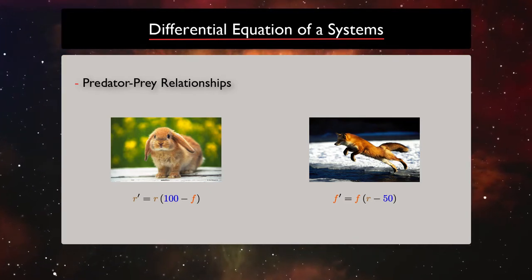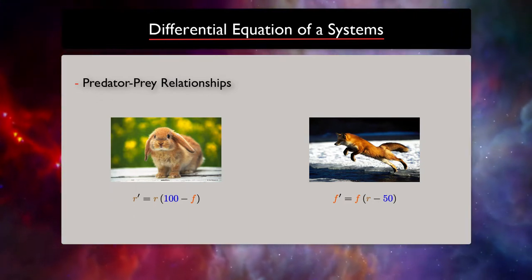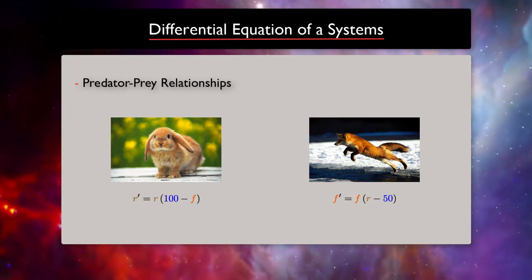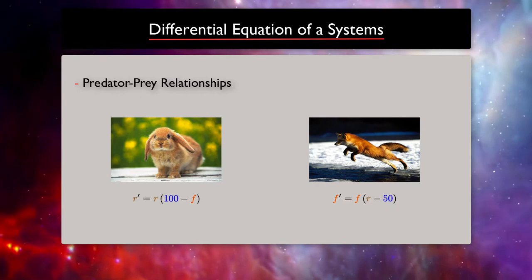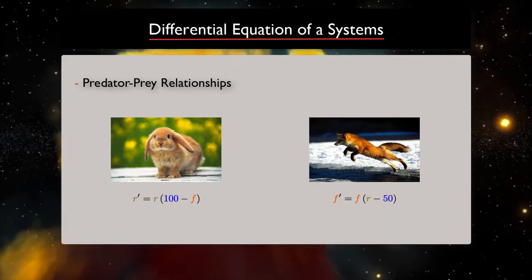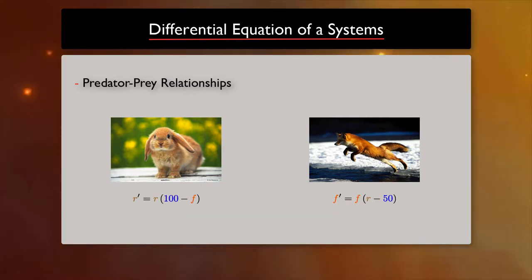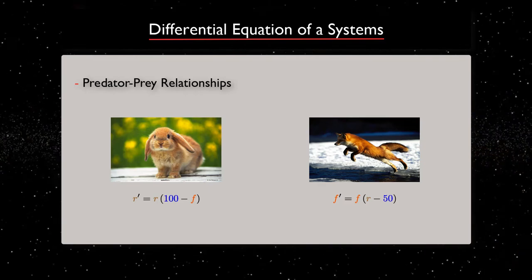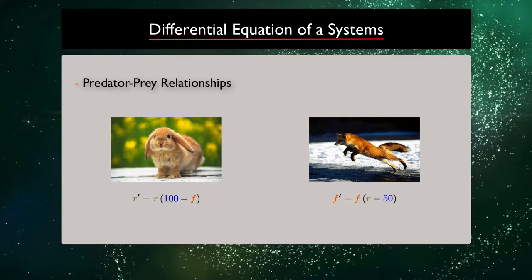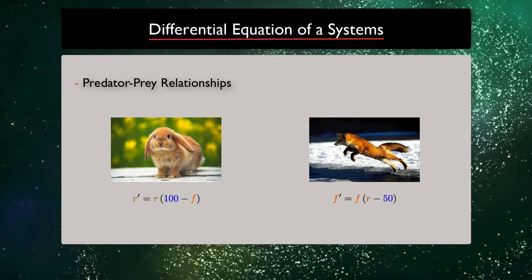If we take fox-rabbit as an example, then if rabbits live on their own, they will reproduce with the velocity of hundreds. And foxes without rabbits will starve and their population will decline with a velocity of, let's say, minus 50. If we put these two species in the same environment, foxes will catch and eat rabbits. So, the loss of the rabbit population would be proportional to the number of foxes and the number of rabbits, both of them.